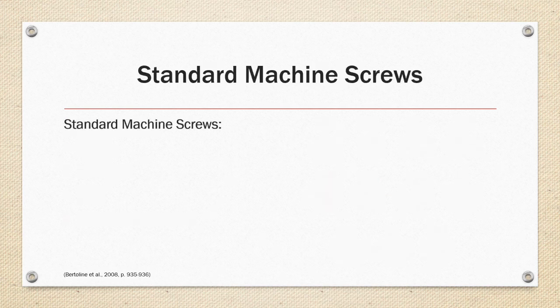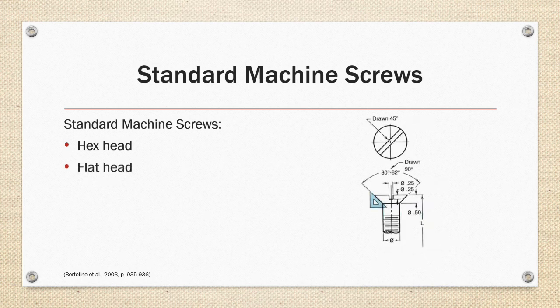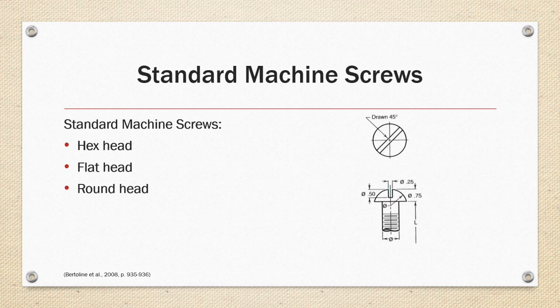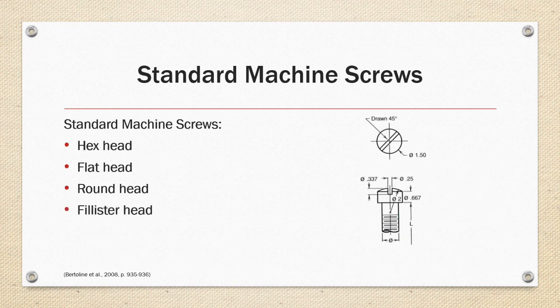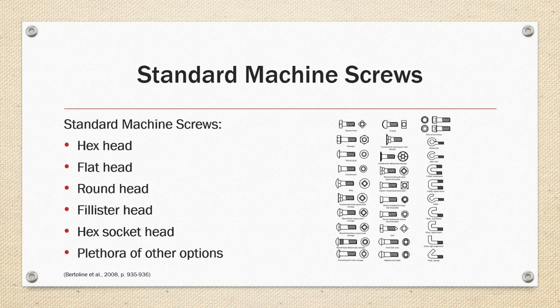Standard machine screws. We have our hex head, our flat head, the round head, the phillister head which can have a variety of drives either slotted or phillips, or even like the hex socket head, a recess that's either a socket for a hex or a star Torx type fastener driver. There is also a plethora of other options and in most cases they are termed screws unless used with a nut, unless the fastener itself is designed only to be used with a nut.